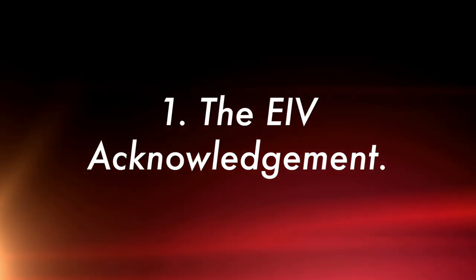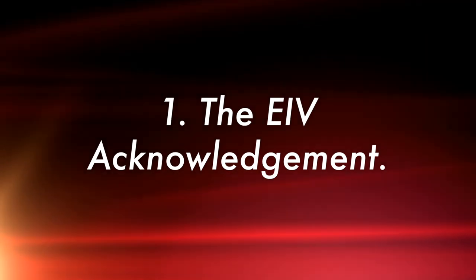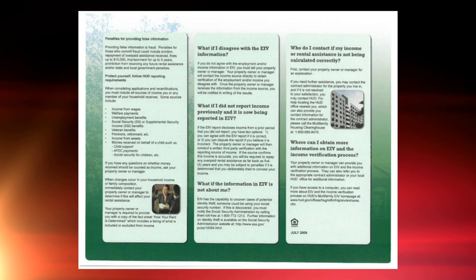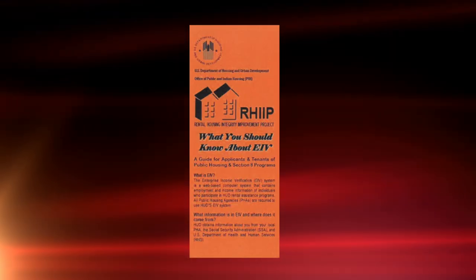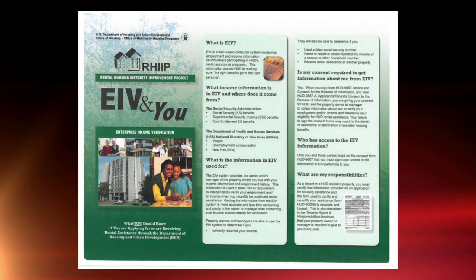Today's four tips are: number one, the EIV acknowledgement. It should be the EIV and You brochure. While in a particular section of one of the states in our portfolio, they ran the EIV announcement from the RIP listserv notice and that was incorrect, so of course they received the finding for not having the EIV and You brochure. So if you're managing for a housing authority or if you are a housing authority, it has to be the EIV and You brochure as the acknowledgement.